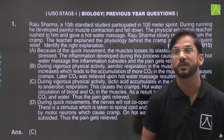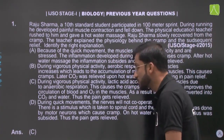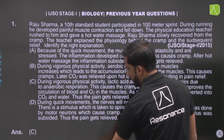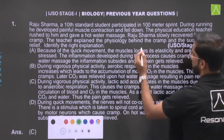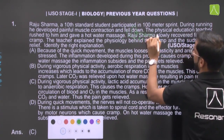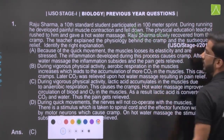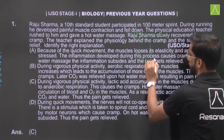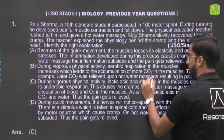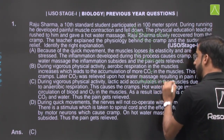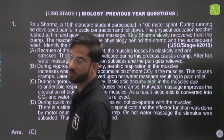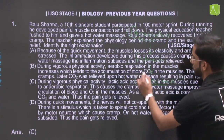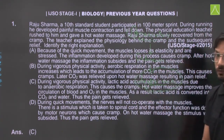For this question we need to understand the topic of muscle cramps. During anaerobic respiration, in the absence of oxygen, lactic acid accumulates which causes the cramp.